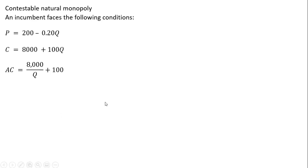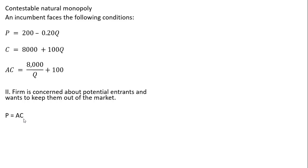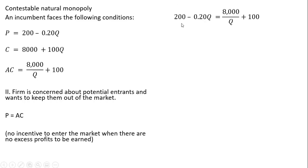If the firm is concerned about entry, same setup. The firm can only keep out entrants if there are no above-normal profits or economic profits to be made, and that can only occur when price equals the cost per unit, price equals average cost.